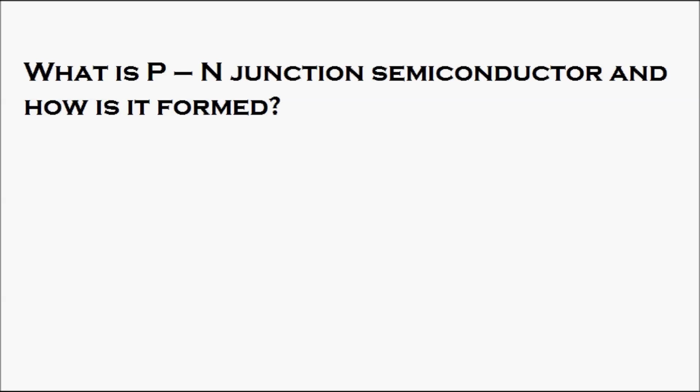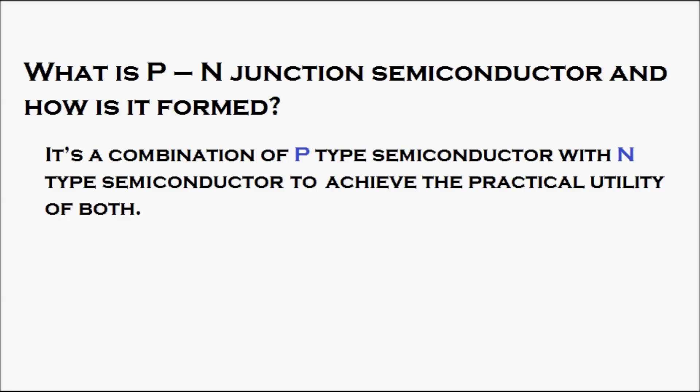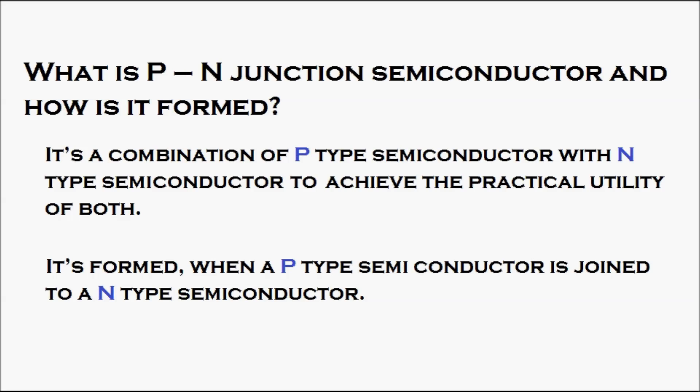What is a PN junction semiconductor and how is it formed? It is a combination of a P-type semiconductor with an N-type semiconductor to achieve the practical utility of both. It is formed when a P-type semiconductor is joined to an N-type semiconductor. With the help of this animation, let's see how the P-type and N-type semiconductors work.